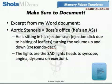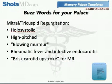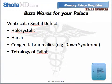So let's go through the rest of the buzzwords that need to be in your palace. For mitral and tricuspid regurgitation: holosystolic, high-pitched, a blowing murmur, rheumatic fever and infective endocarditis, and a brisk carotid upstroke for mitral regurgitation. For ventricular septal defect: also holosystolic, harsh, associated with congenital anomalies like Down syndrome and tetralogy of Fallot.